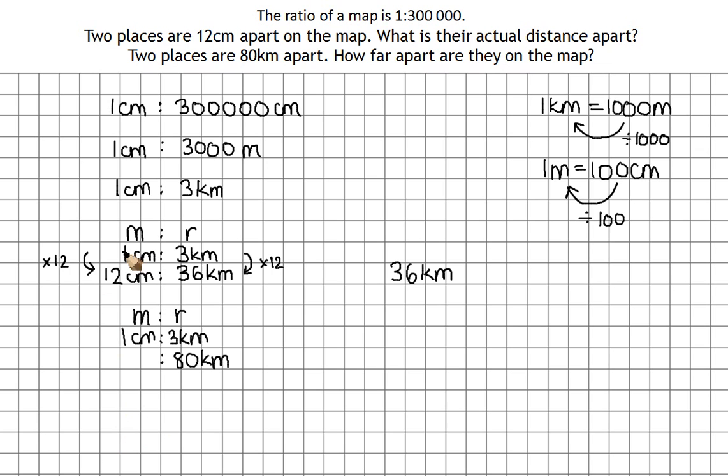Now I know that in real life they are 80 kilometers apart. I need to work out how far it is on the map. Now in this bit of the question, the earlier part, it was easy to see that to get from 1 to 12 we times by 12. It's not as easy to see there what we have to times by. But we need to work it out. So we're saying that 3 times something that we don't know is 80.